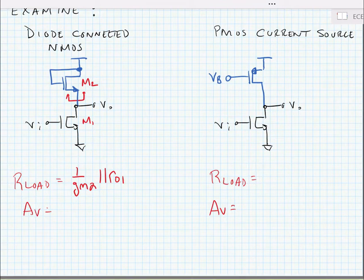If I look at my total voltage gain then, it would be minus gm1. I'm going to assume that gm2 is much, much smaller than ro1. So we can say that the gain is minus gm1 over gm2 approximately.